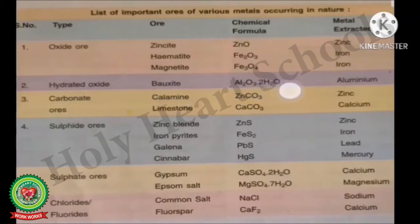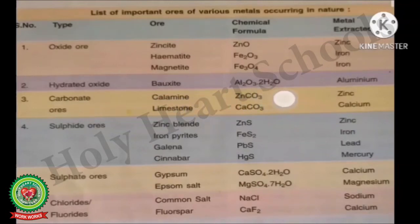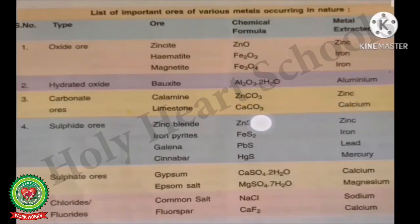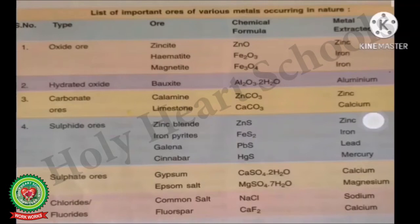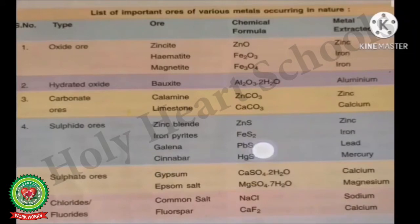Carbonate ores: Calamine has chemical formula ZnCO3 and zinc metal is extracted from it. Limestone has chemical formula CaCO3 and calcium is extracted from limestone. Sulfide ores: Zinc blende has formula ZnS and zinc is extracted from it. Iron pyrites has formula FeS2 and iron is extracted. Galena has formula PbS and lead is extracted. Cinnabar has formula HgS and mercury metal is extracted from cinnabar.